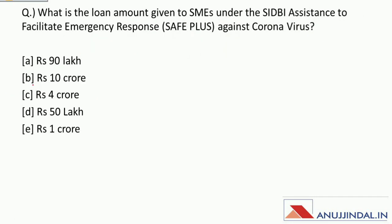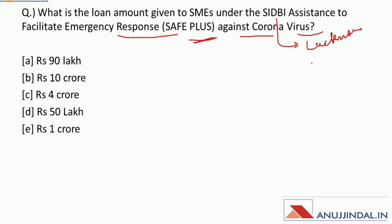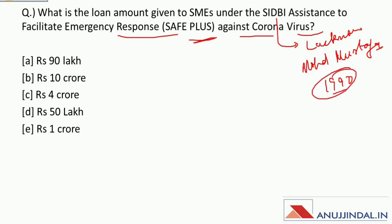What is the loan amount given to SMEs under the SIDBI Assistance to Facilitate Emergency Response — that is SAFE Plus — against coronavirus? SIDBI is headquartered in Lucknow and is headed by Mohamed Mustafa. SIDBI was established in 1990 by an Act of Parliament. The loan amount under SAFE Plus is rupees 1 crore.